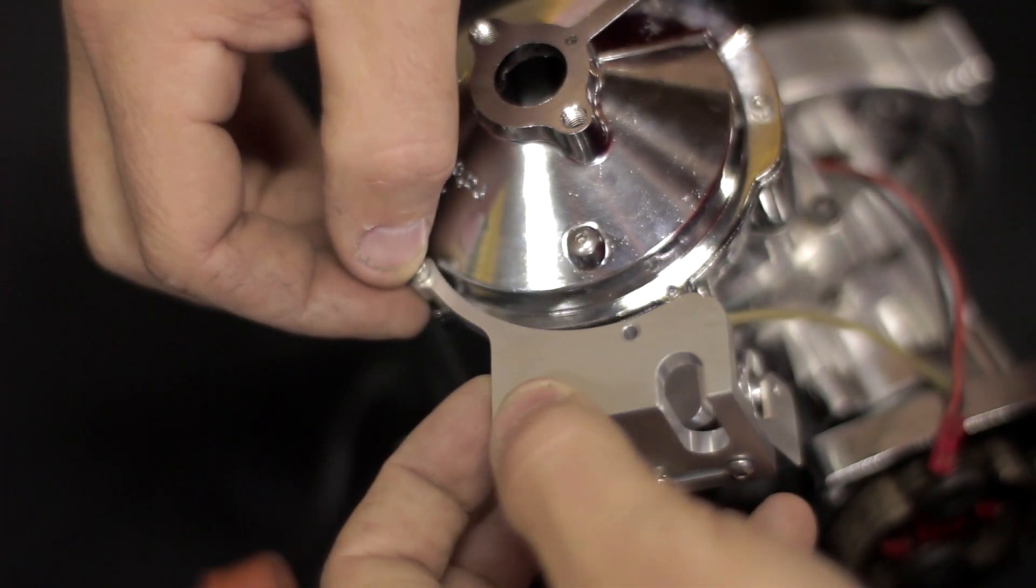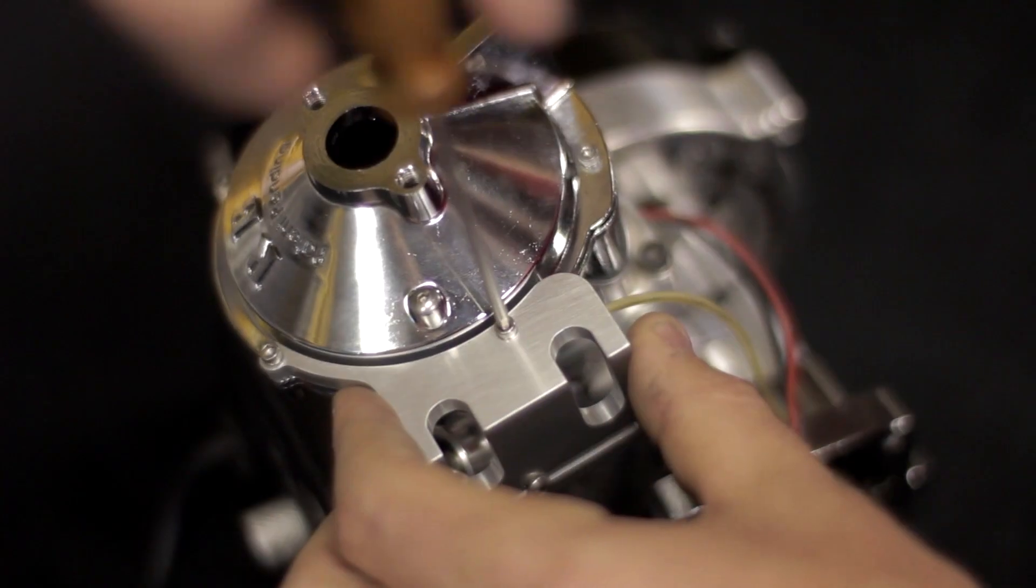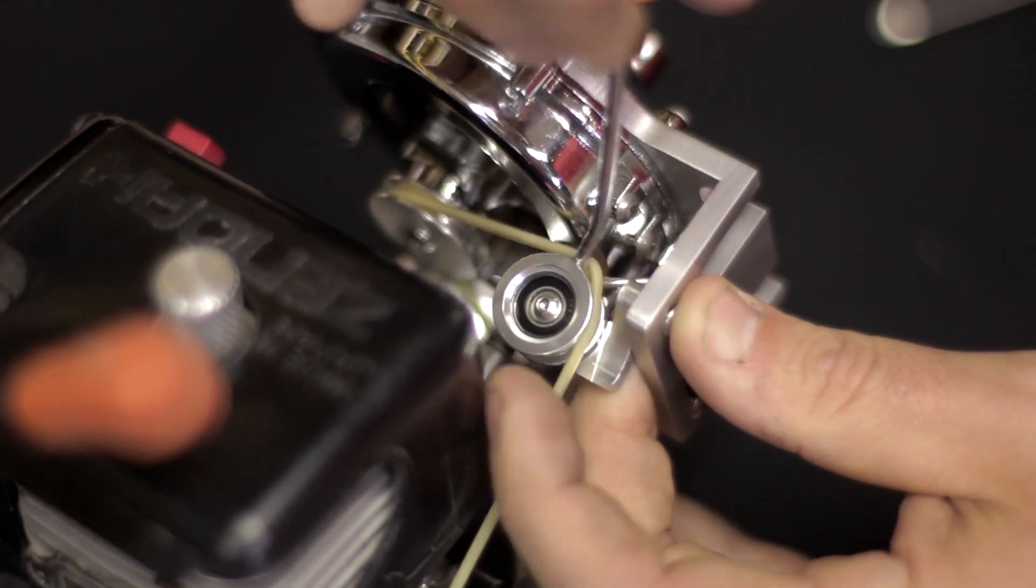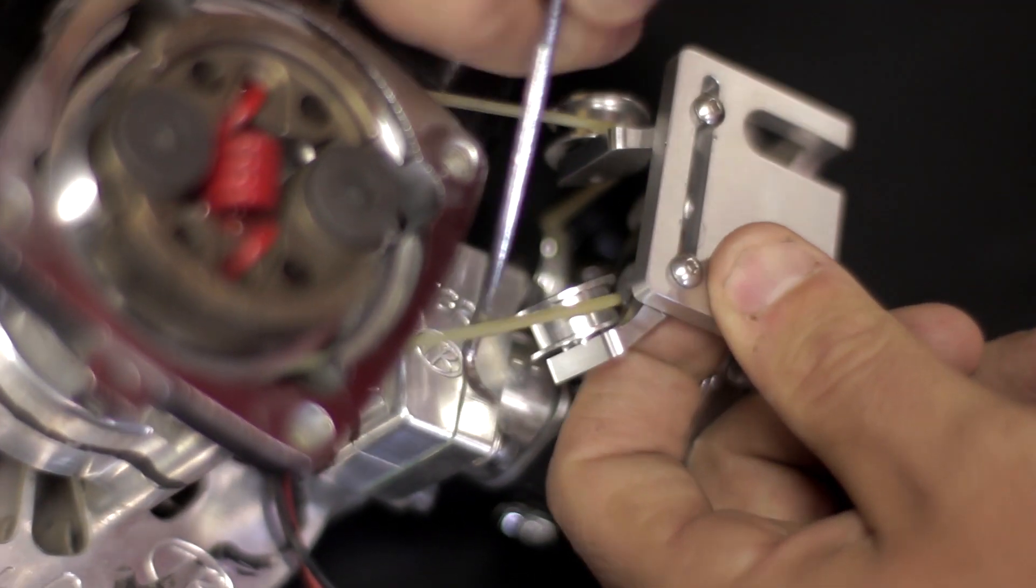Next you want to install the mounting assembly for the pulleys. Now we want to install the belt. You want to draw it from the bottom up towards the top, then you want to pull the belt over top of the idler pulleys.